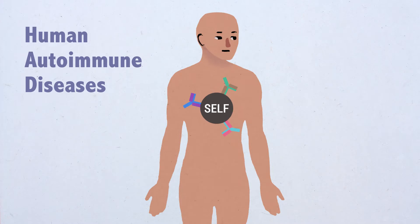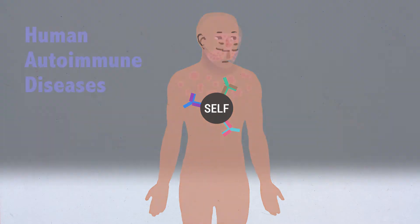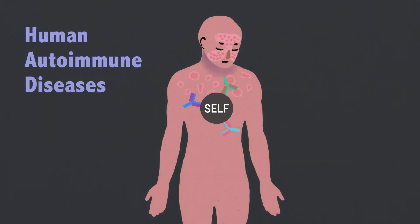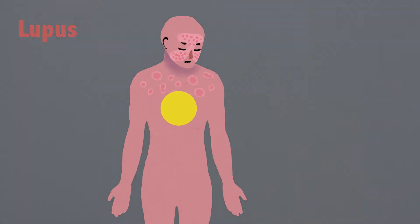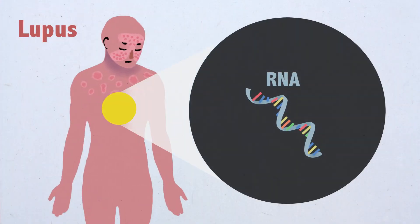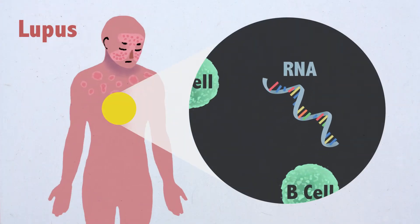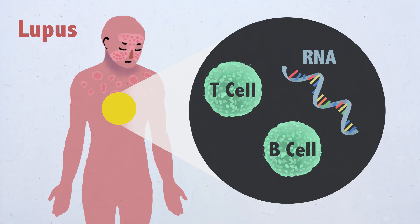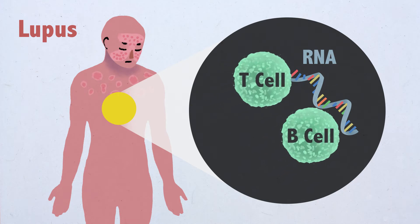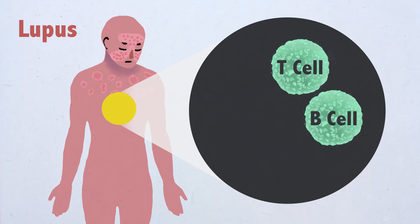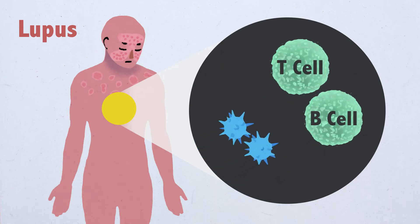Human autoimmune diseases arise due to aberrant immune responses to self-molecules. In lupus, nucleic acids such as RNA are a major target of the adaptive immune system — the so-called T and B cells that otherwise fight infectious agents.